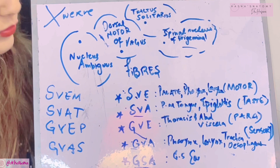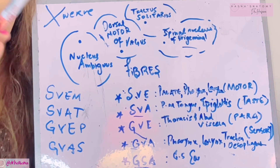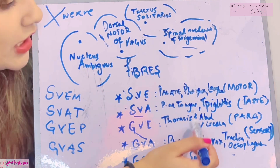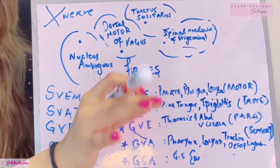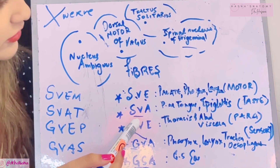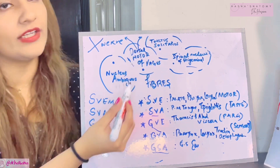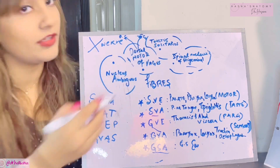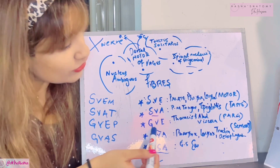For general visceral efferents — GUEP, P for parasympathetic — the parasympathetic supply of the vagus is given chiefly to the thoracic and abdominal viscera: the heart, lungs, stomach, and intestines. It also gives motility to these organs. These general visceral efferent fibers originate from the dorsal motor nucleus of the vagus nerve, which is a mixed nucleus containing both parasympathetic/secretomotor fibers and viscero-sensory fibers.